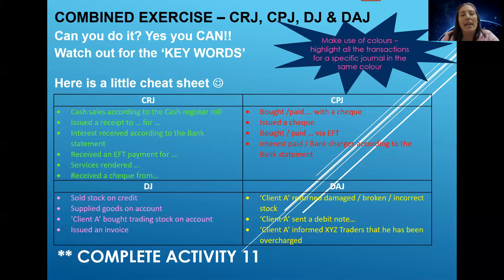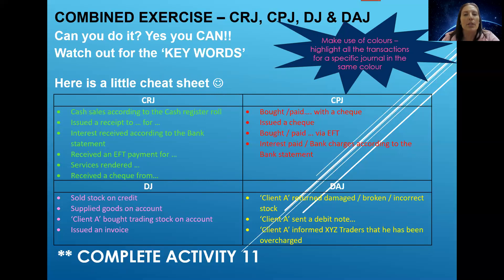Both methods are fine. Some students like to take the transactions from the top and record them as they appear in date order. So you see the first transaction — okay, it's the owner giving a capital contribution, that goes to the CRJ, and you go and record it. The next one, you sold on credit to a debtor — okay, that's DJ, you go to the DJ and record it. That is perfectly fine if you're happy to do that.